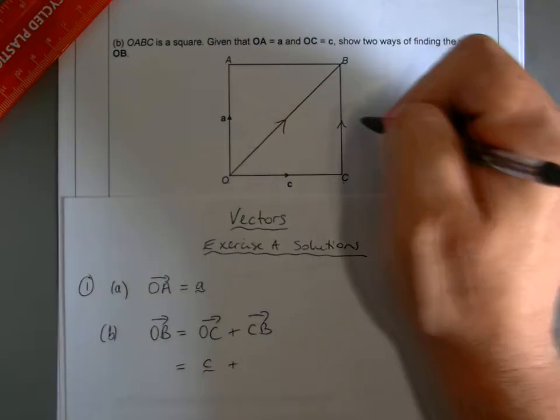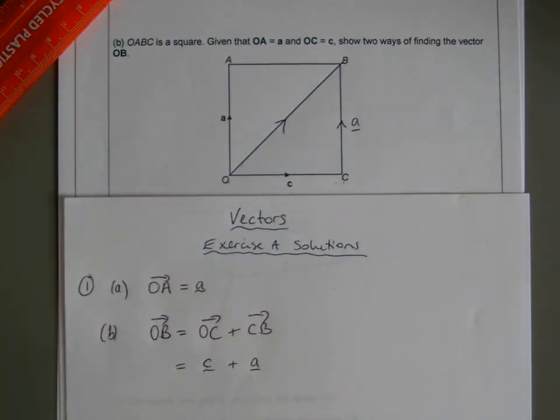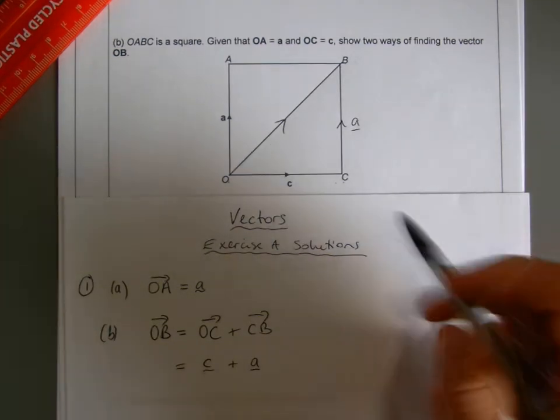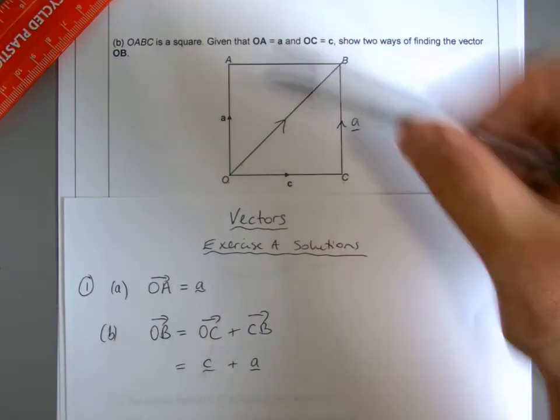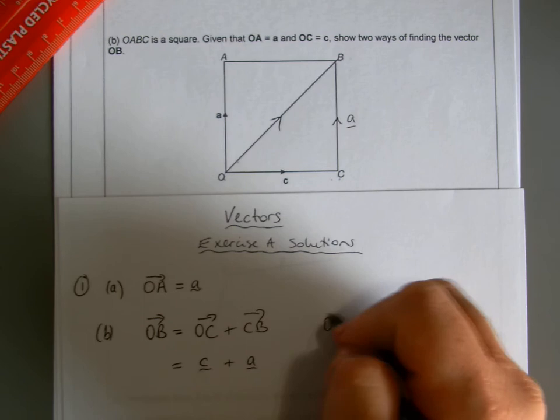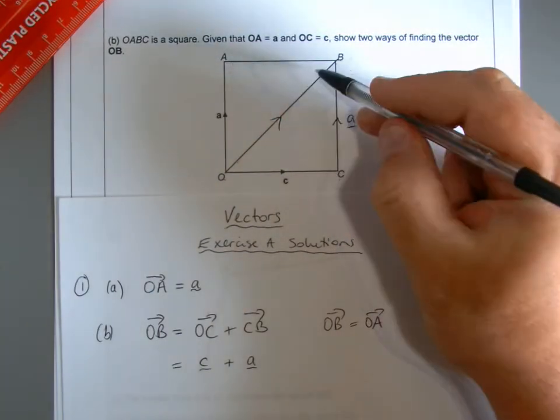So I've got my answer then, c plus a. Alternative approach: well, I could have done, I could have gone this way, couldn't I? O to B, I could have gone OA along there and then AB.